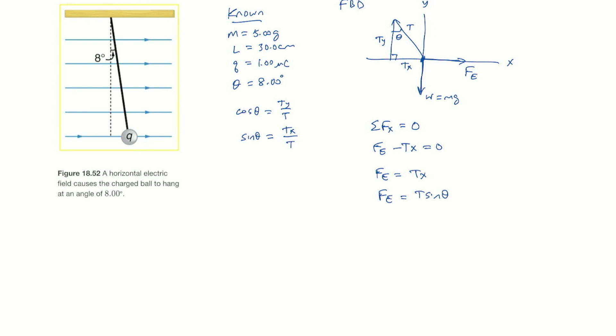Let's sum our forces in the y direction. Again, no acceleration in the y, so the sum of the forces is zero. We have the y component of tension up minus the weight because that's down. That's it in the y direction. They are equal to zero.